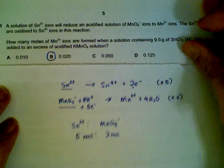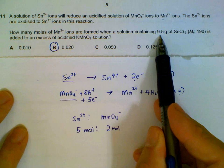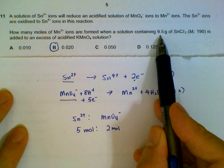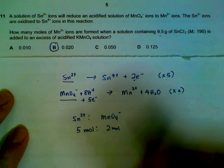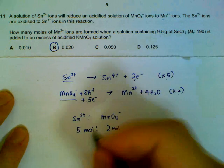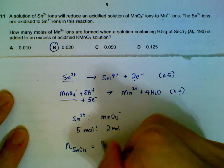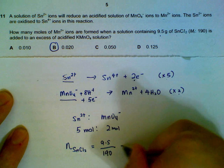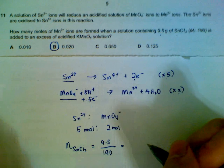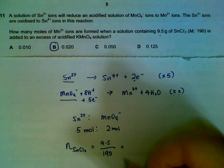And after this it's just a simple mole calculation question. We have 9.5 grams of tin chloride. So if we can find out the number of moles of tin, we can find out the number of moles of MnO₄⁻. So 9.5 grams of tin chloride, let's see how many moles that will give us. 9.5 divided by MR, which is given as 190. We can work it out or leave it aside.